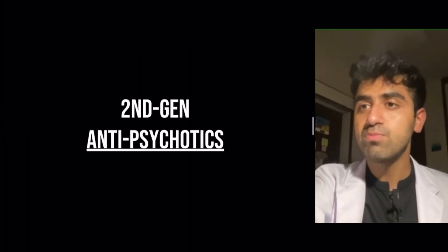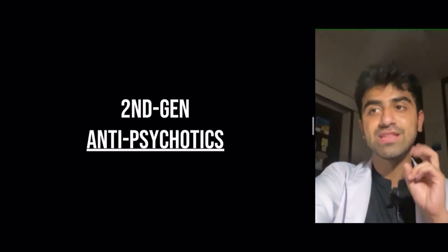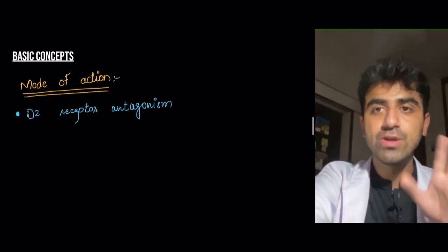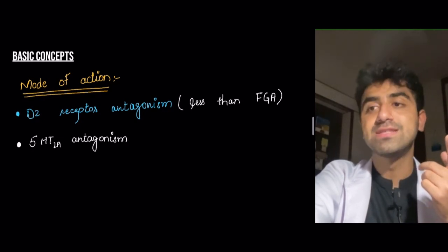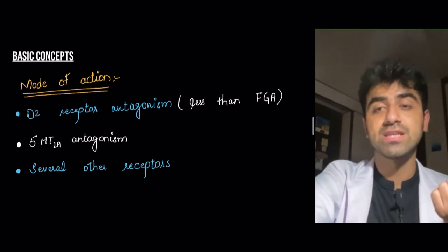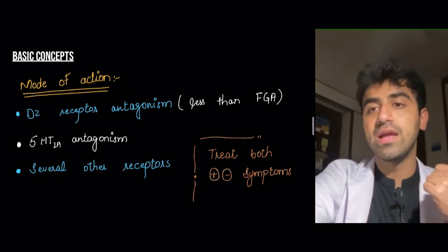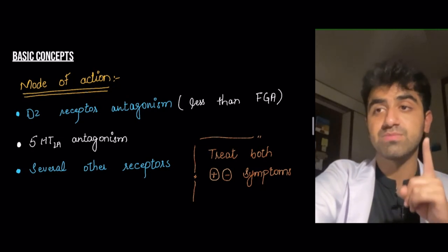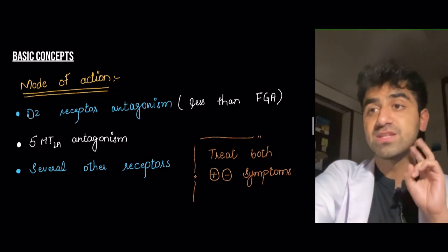Now moving to second generation antipsychotics. The mode of action is the same D2 receptor antagonism, but less than first generation, and additionally serotonin 5-HT2A receptor antagonism along with several other receptors. A key difference: first generation treats only positive symptoms, while second generation — because it's the second — treats both positive and negative symptoms.